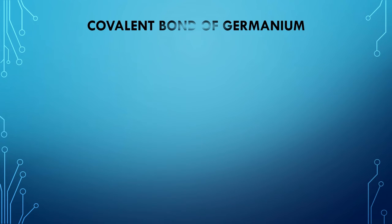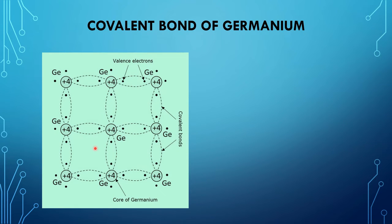In this slide we talk about the two-dimensional covalent bond of germanium crystal. Germanium has 4 valence electrons. The inner ionic core of the atom has a positive charge of plus 4 units of electronic charge. The 4 valence electrons are held by the covalent bond with the valency electrons of the 4 nearest neighbor germanium atoms, and this bond is called a covalent bond.